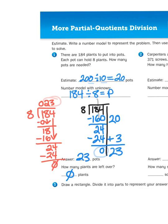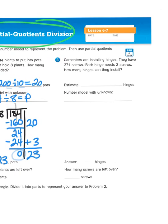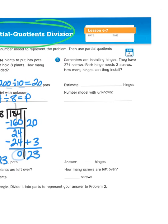Both strategies are just as effective. But since we're practicing partial quotients division, let's stick with that for right now, shall we? Alright, problem number 2, it says, Carpenters are installing hinges. They have 371 screws and each hinge needs 3 screws. How many hinges can they install?